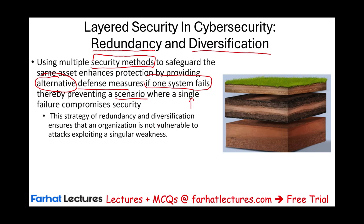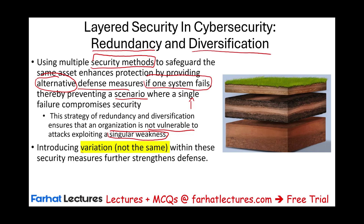In this strategy of redundancy and diversification, make sure the organization is not vulnerable to an attack exploiting a singular weakness. If they penetrate your system from one area, there should be another form of defense — a secondary, and maybe a third and fourth level of defense, depending on how important the asset is. Introducing variation means the defenses don't have to be the same; they should not be the same. Because if attackers penetrate the first line, they can do the same thing to penetrate the second line. Variation further strengthens these security measures.